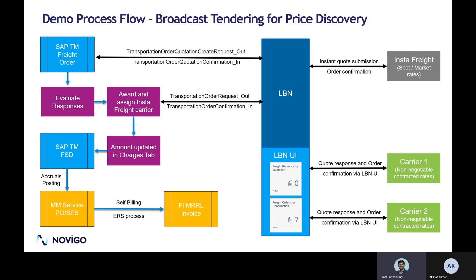In this scenario, we are trying to do a slightly more complex scenario — a price discovery scenario. We are mixing carriers who have freight agreements in the system with carriers who do not have freight agreements. For example, InstaFraid does not have a freight agreement, and we are expecting a spot or market rate from InstaFraid, whereas for carrier one and carrier two, we have negotiated freight agreements in the system and will be sending requests accordingly.